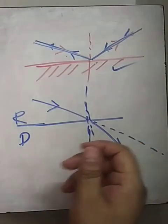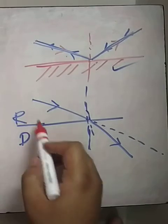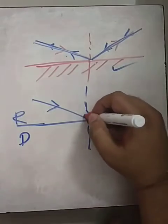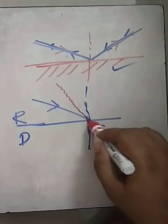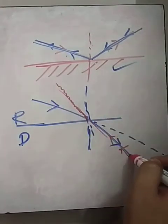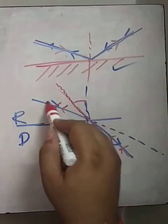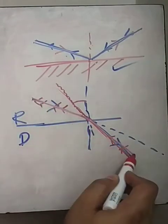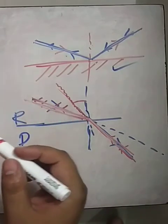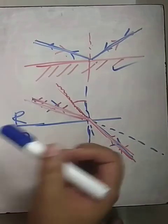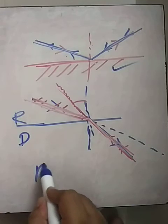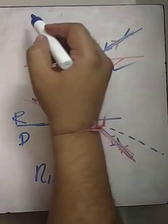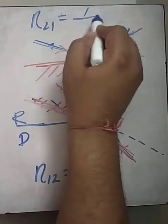Let me change the color so you can understand better. If light goes from rarer to denser, it bends towards the normal. But if light goes from denser to rarer, it bends away from the normal. So if this is the incident ray, this is the reflected ray — and this is the law of reversibility. Mathematically, this is expressed as: η₁₂ = 1 / η₂₁, or equivalently, η₂₁ = 1 / η₁₂.